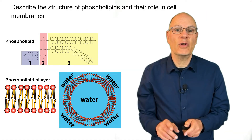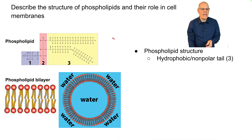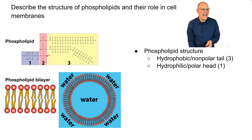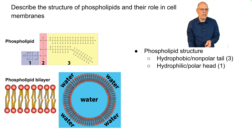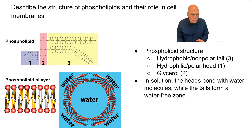Describe the structure of phospholipids and their role in cell membranes. Phospholipid structure: there's a hydrophobic non-polar tail region — here's the structural formula and a representation. There's a hydrophilic polar head; notice that the head has a phosphate group with its negative charge. The whole thing is held together by a three-carbon molecule called glycerol. In solution, when phospholipids are mixed with water, the heads bond with water molecules while the tails form a water-free zone.